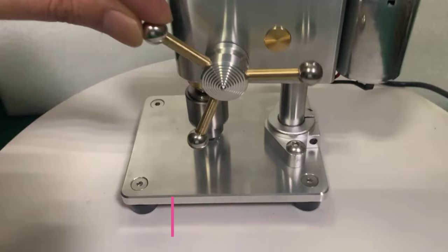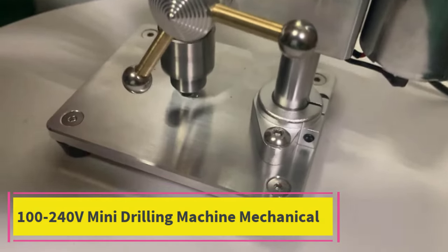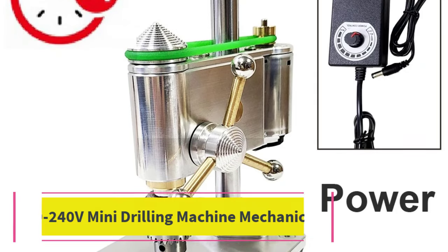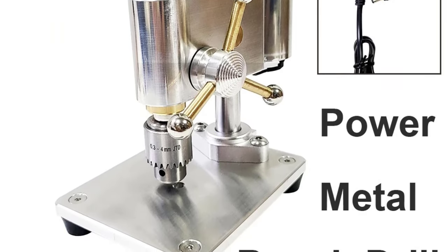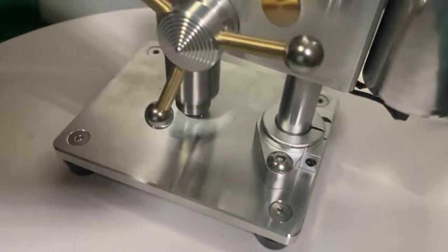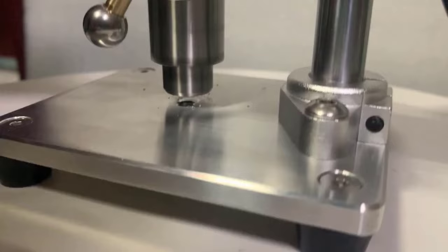Top 3: 100-240V Mini Drilling Machine Mechanical. Introducing the 100-240V Mini Drilling Machine, a versatile and compact tool designed for precision work in watchmaking, model crafting, and mechanical decorative projects.